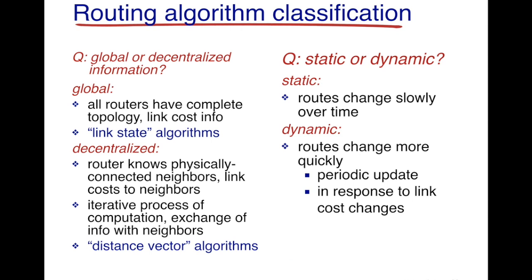Now that we have an idea of what a routing algorithm does, the next thing to understand is whether this routing algorithm requires global information or is it decentralized. Requiring global information means that all routers have an idea of the entire network topology — that is, how the link costs vary for each and every link. This is what link state algorithms work upon: all link state information is collected, and using this entire information at a centralized location, the task of finding paths between nodes is carried out.